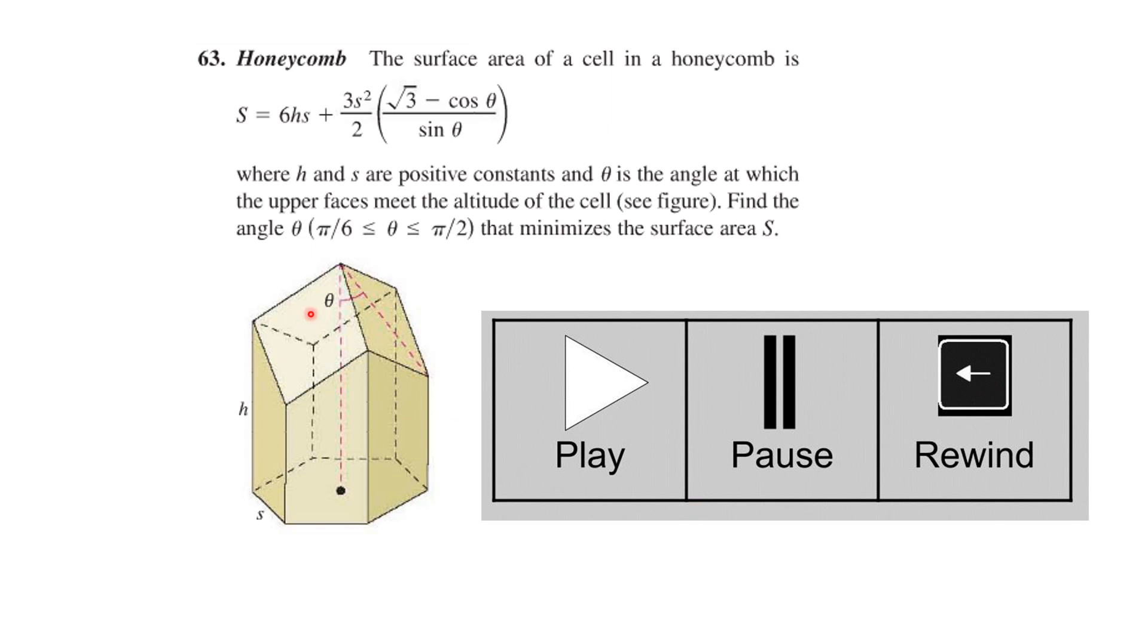Here's a problem dealing with a honeycomb. This is a word problem and maybe more interesting than many that will study. The surface area of a cell in a honeycomb is given by this equation. If this were a class in physics I probably would ask you to derive that equation. So here we have this equation h and s are positive constants and theta is the angle where the upper faces meet the altitude of the cell and you can see the picture that's the angle that we have. Find the angle theta where theta runs from pi over 6 to pi over 2 that minimizes this surface area.